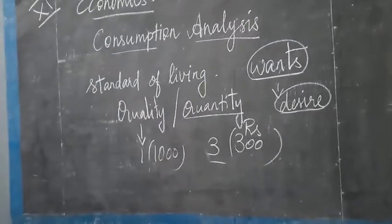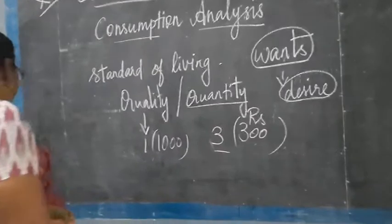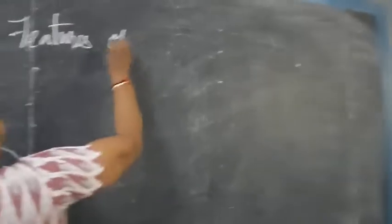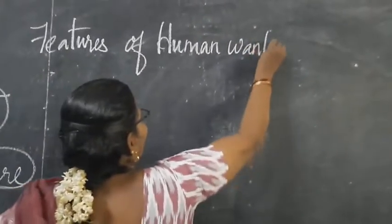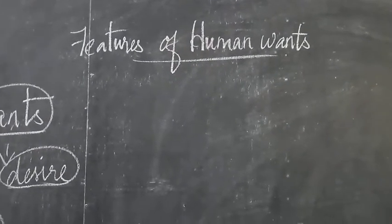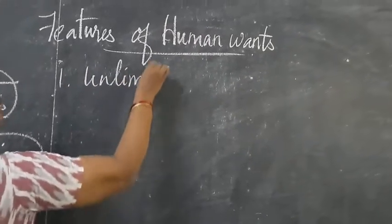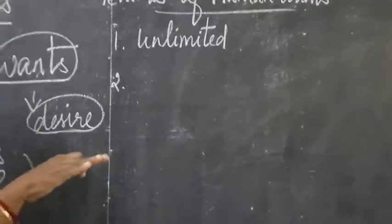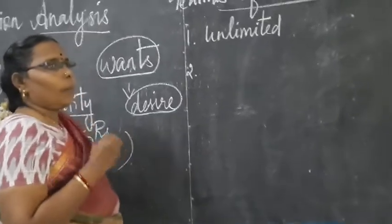And then we are going to study about the human wants and the characteristics of human wants. Wants is the basic thing for the starting period of consumption. So without consumption, there is no economic activity. What are the characteristics? Wants are unlimited. As we study, our wants are unlimited. If one of our wants has been satisfied, immediately the next want arises in our heart.